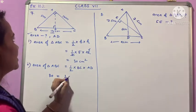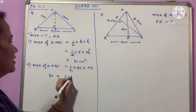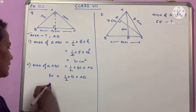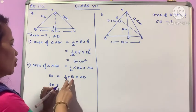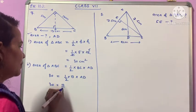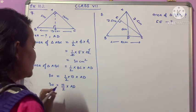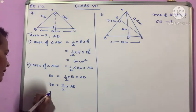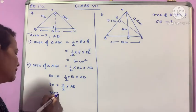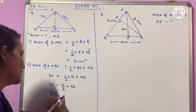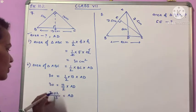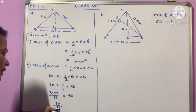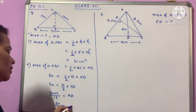30 equals half times 13 times AD. Solving: 30 times 2 equals 13 times AD, so 60 equals 13 times AD. Therefore AD equals 60 divided by 13 centimeters. This gives us the height AD.